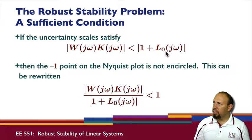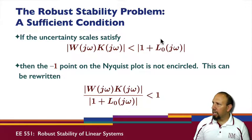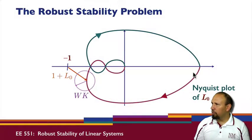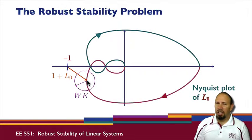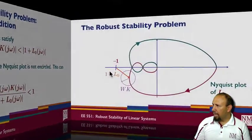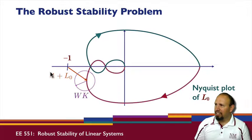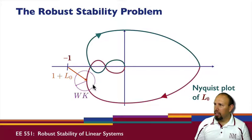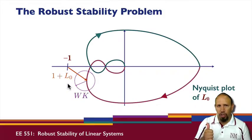What does this quantity even mean? The loop gain is the plant times the controller, and since we know the nominal plant and the controller, we can actually plot the Nyquist plot of that. So 1 plus L0 is actually the distance from minus 1 to L0 on the Nyquist plot. This inequality is basically saying: for this function of frequency, we're looking to see if this quantity has magnitude less than this magnitude — which is actually the magnitude of 1 plus L0. We're looking at the magnitude of W times K at that point. If this circle does not touch the minus 1 point, then we're good.